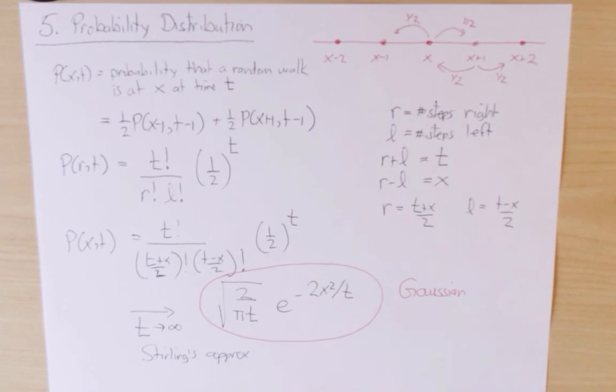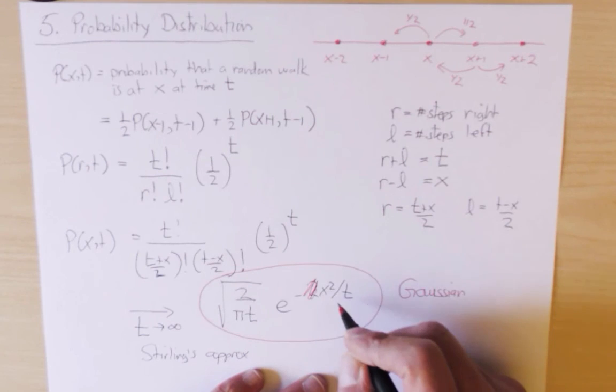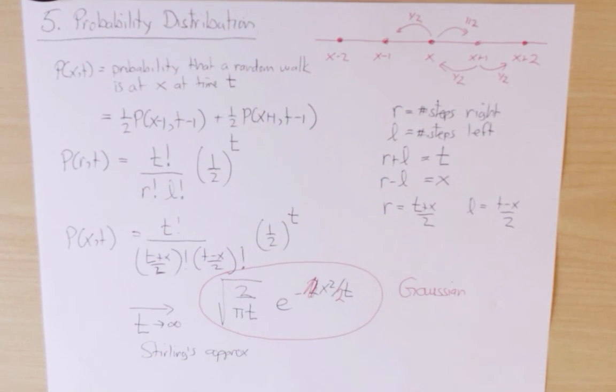After this lecture was completed, somebody pointed out that I made a stupid mistake in the final result. So in using Stirling's approximation to go from the factorial expression for the probability distribution to the Gaussian, the 2 doesn't belong in the numerator, it belongs in the denominator. Sorry about that.